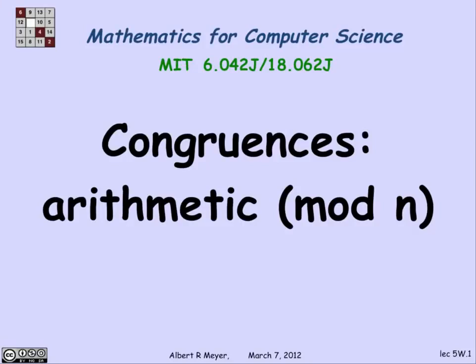The idea of congruence was introduced to the world by Gauss in the early 18th century. He's responsible for some work on magnetism also. And it turns out that this idea, after several centuries, remains an active field of application and research. In particular, in computer science, it's used significantly in crypto, which is what we're going to be leading up to now in this unit.